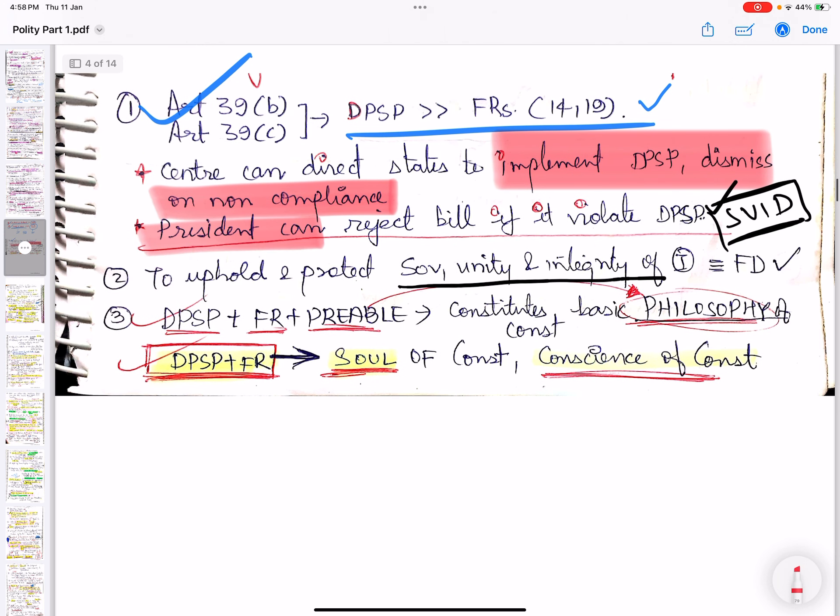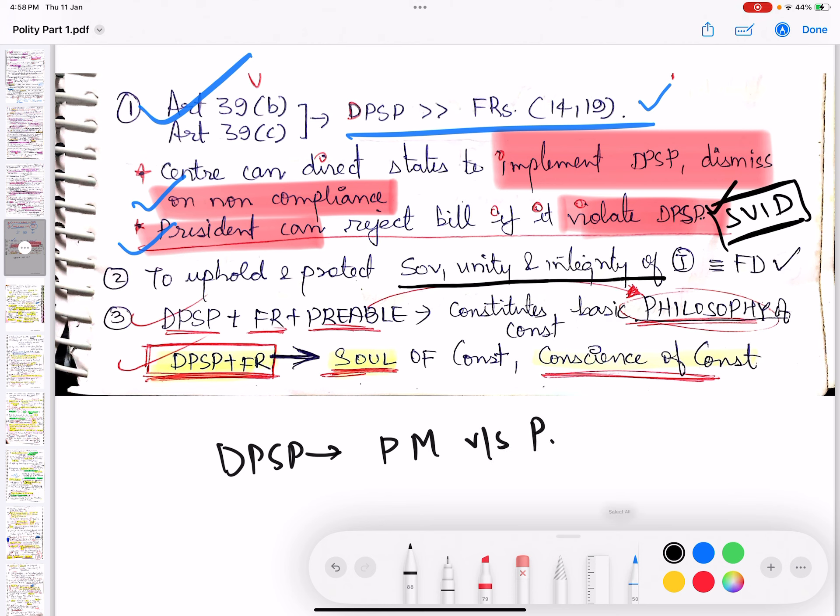Can the President reject the bill if it will violate the DPSP? Yes, this is correct. This is why we say the DPSP criticism is that they create conflict between Prime Minister and President.